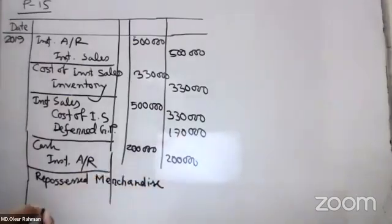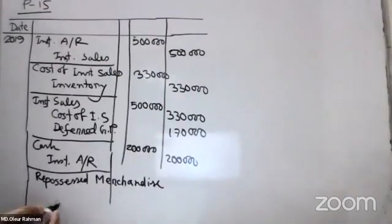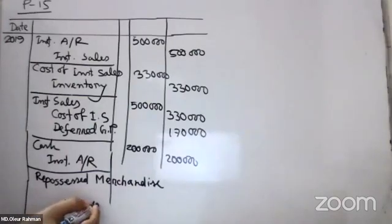Debit account receivable, installment account receivable — very much.